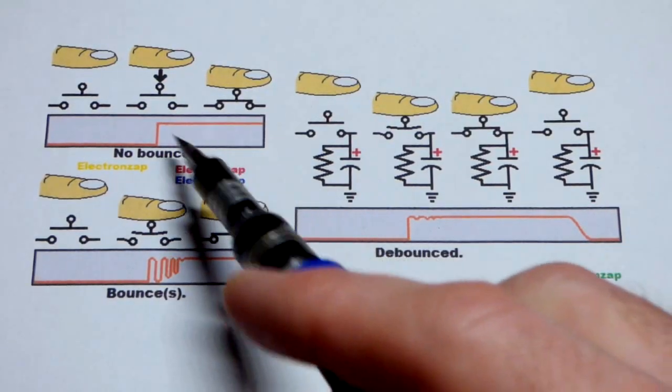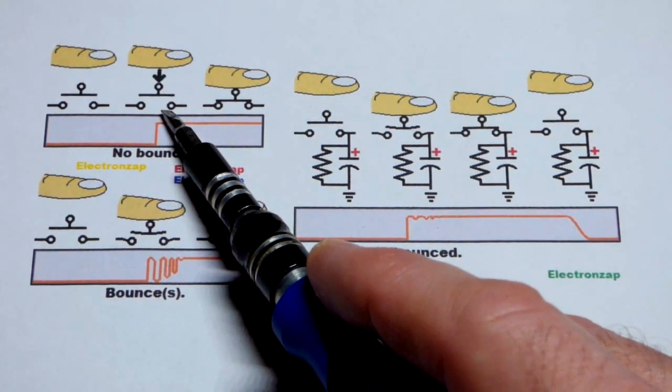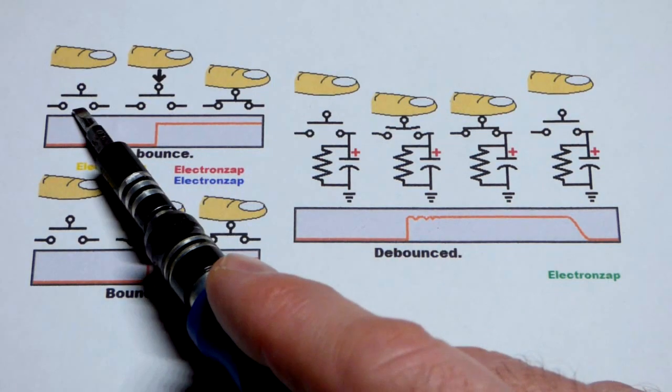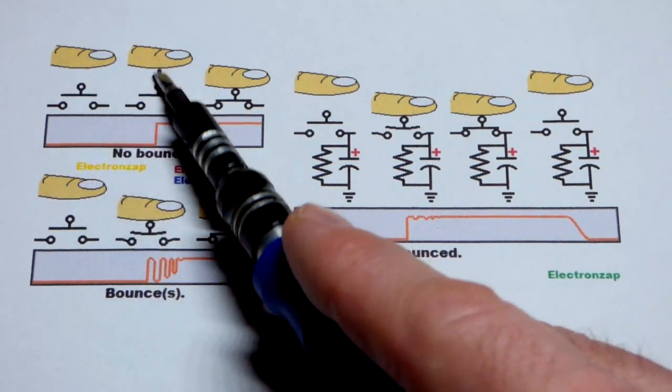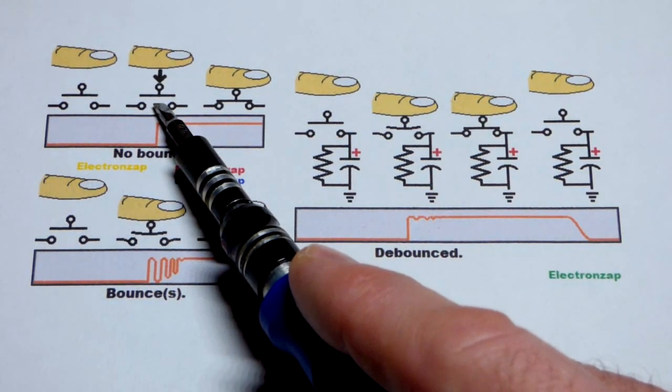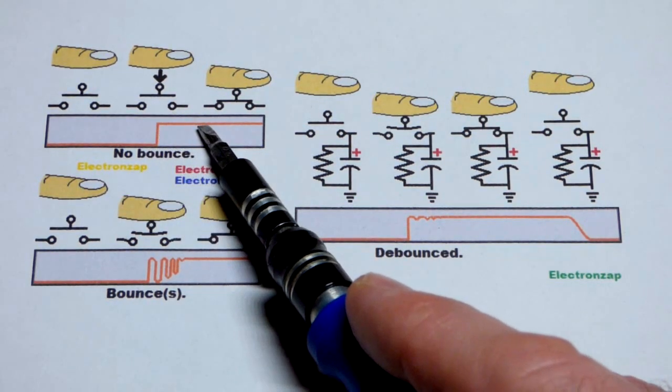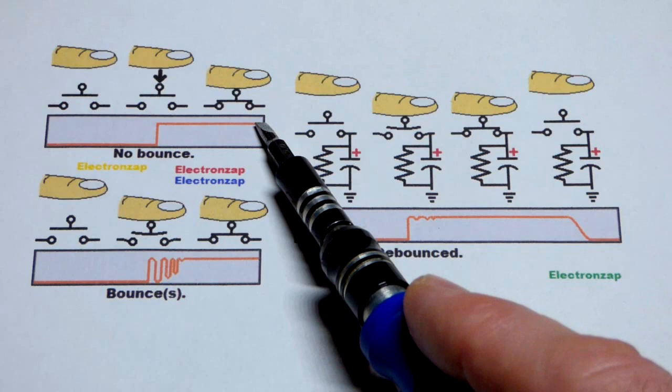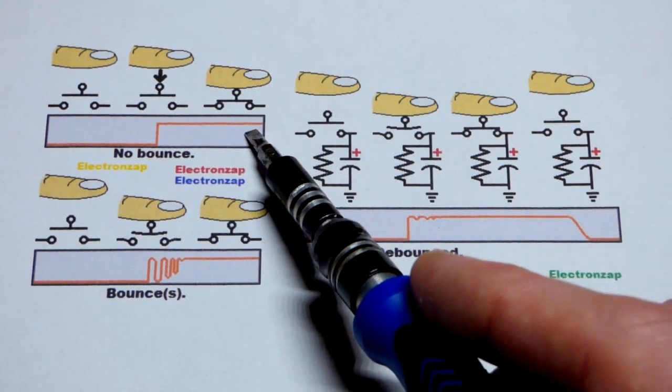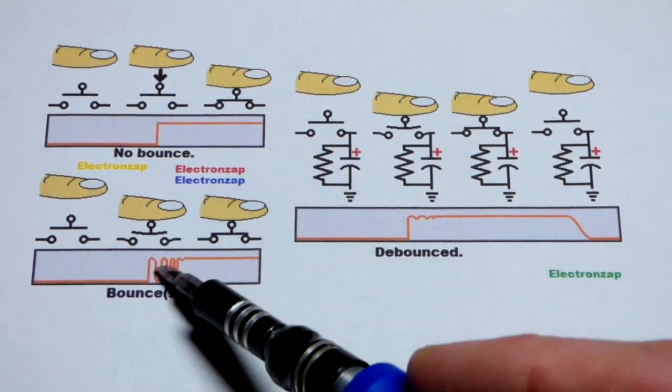When we're using a mechanical switch, like a push-button switch in this video, we think of it being off until we press the switch. Then whatever we are powering will get the full supply voltage as we hold down the switch. Usually, from what we can notice, that's what's going on.